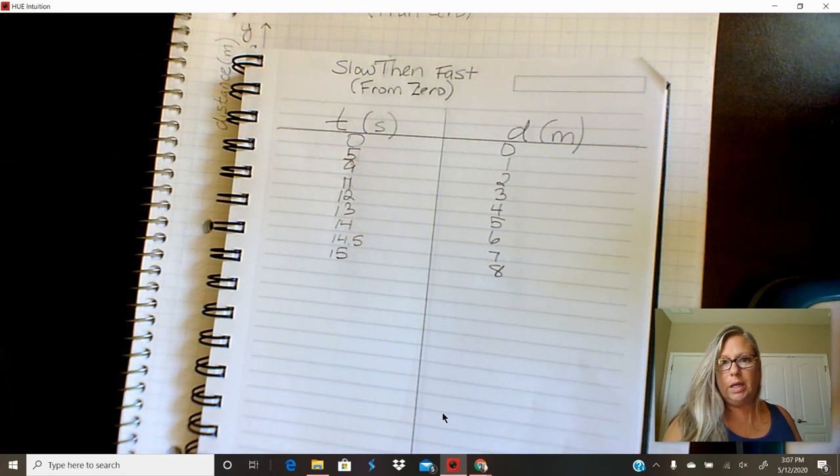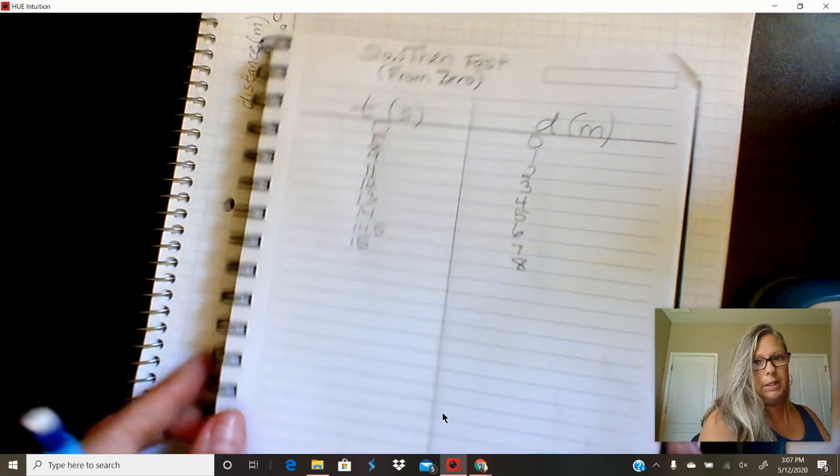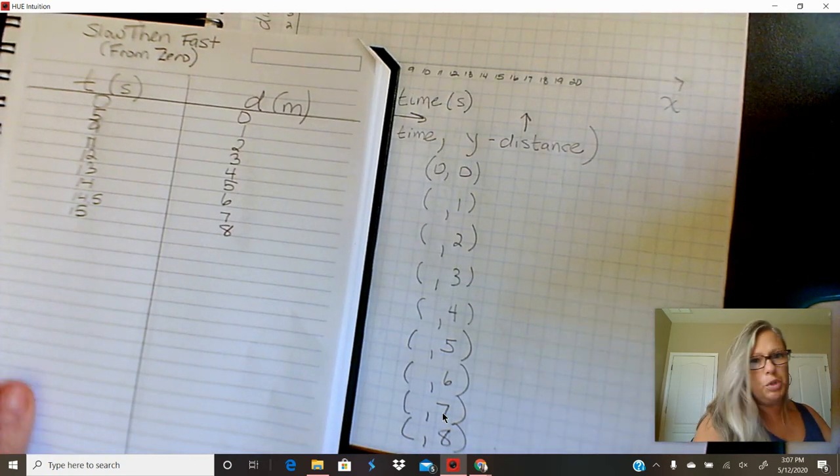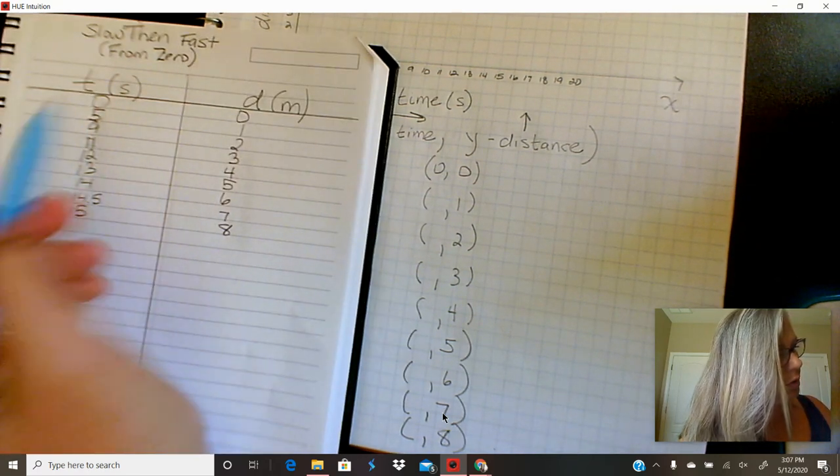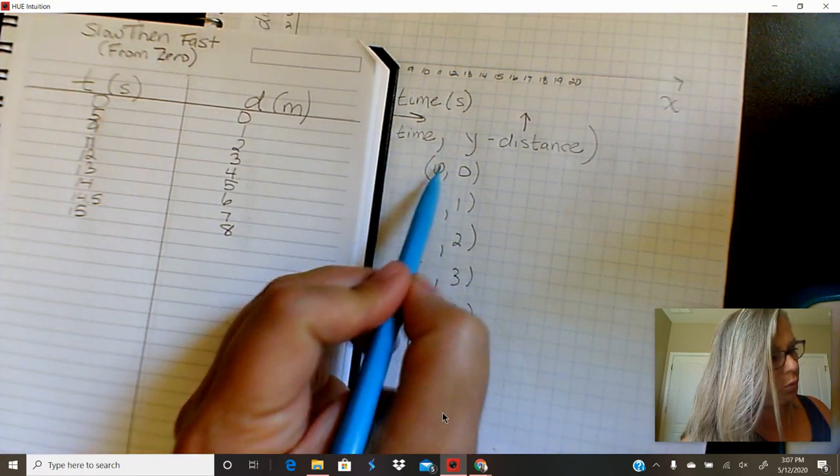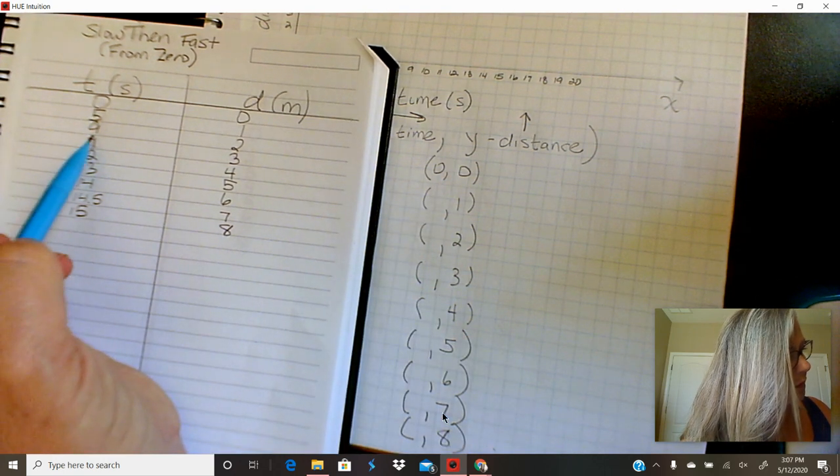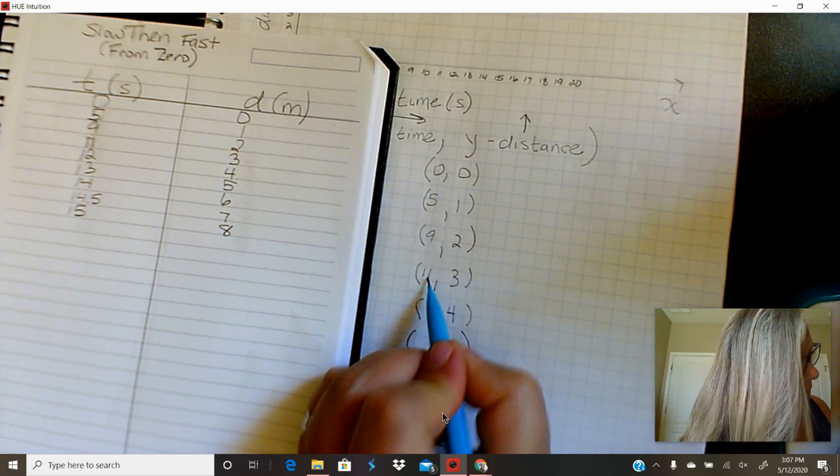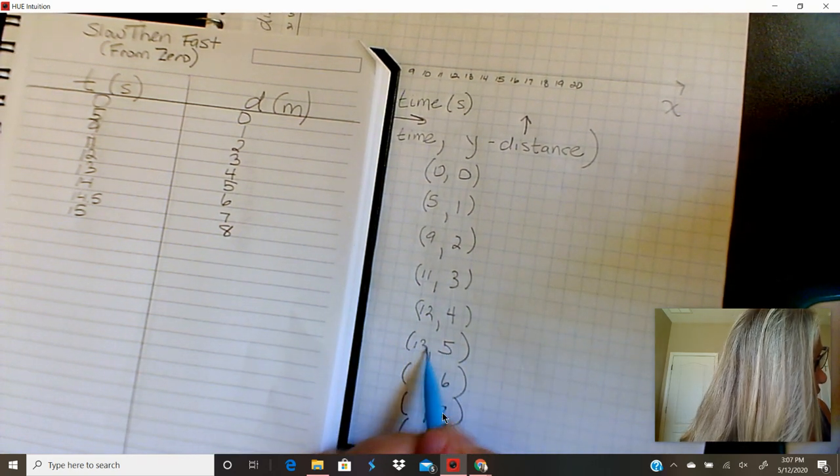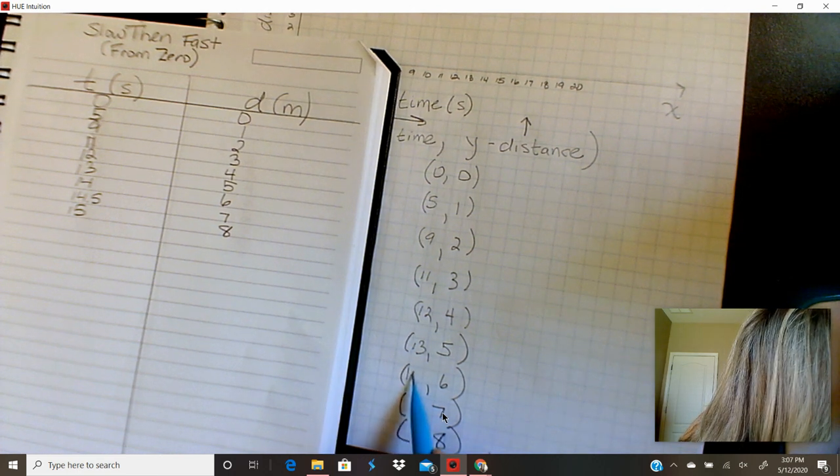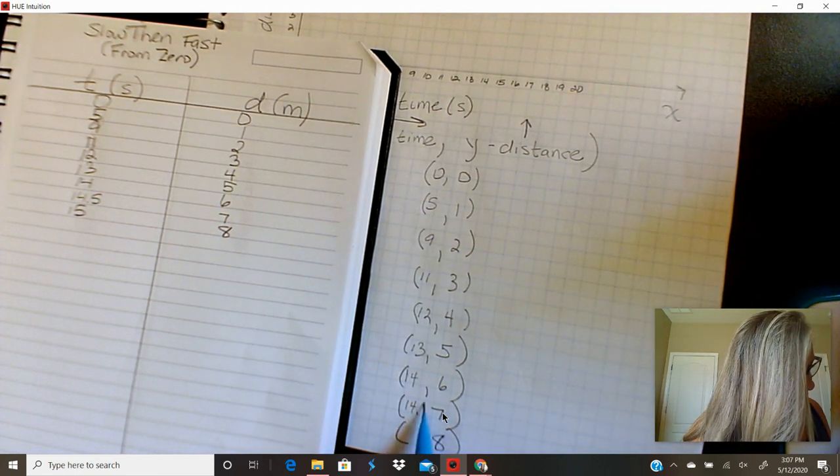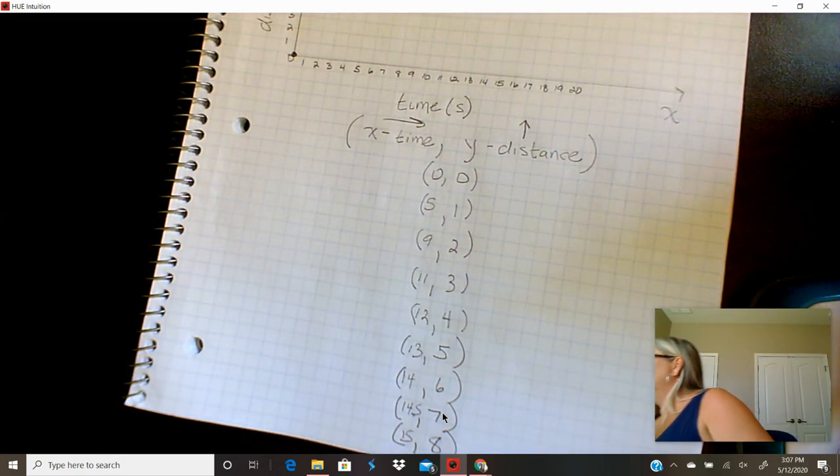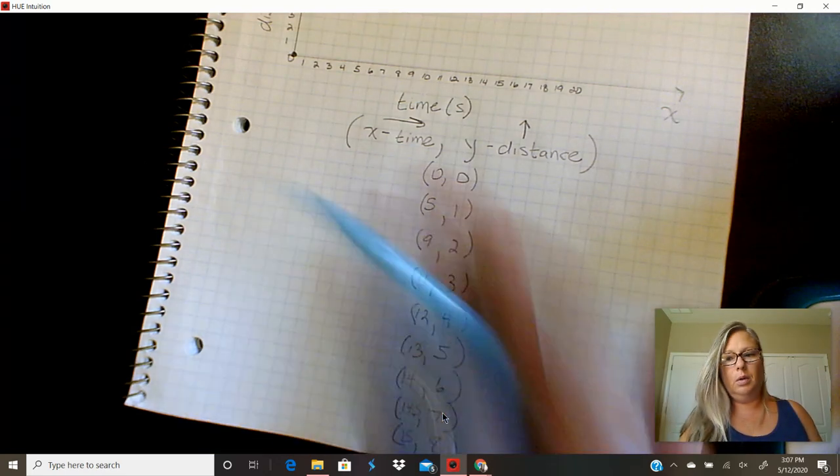Alright, so I already have the data table that we made and now the next step is to take the data table and turn it into coordinates, which really just means copying the data over from the time into the time coordinate which is the first coordinate. So five, nine, eleven, five, nine, eleven, twelve, thirteen, fourteen, fourteen point five and then fifteen. Alright let's do it so this video is nice and short and you can get on with your life.